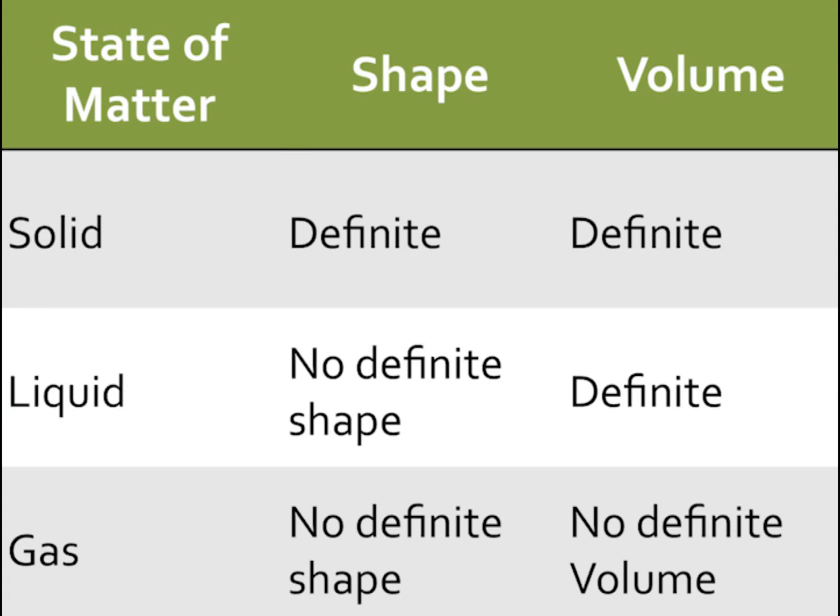Here is a summary of what we just talked about. You should be able to recreate this for your exam. The state of the matter: solids, liquids, and gases. Solid has definite shape, definite volume. A liquid has no definite shape, definite volume. A gas has no definite shape and no definite volume.